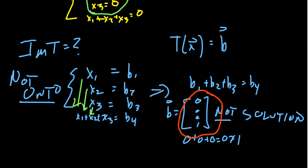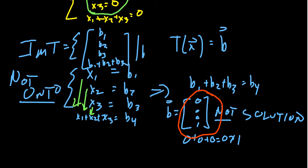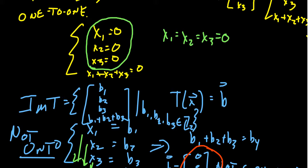The image is the set of vectors of the form (B1, B2, B3, B1+B2+B3) where B1, B2, B3 are arbitrary bits. Those are the only vectors in the image — we can only accept vectors where the fourth entry is the sum of the first three. So this map is not onto, but it is a one-to-one map.